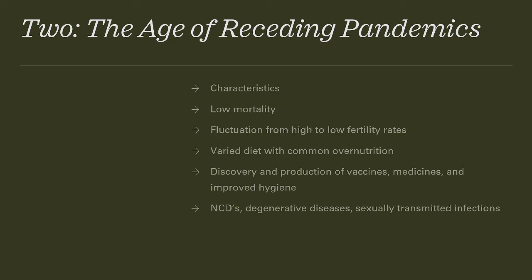The second transition, the age of receding pandemics, spans early modern to the 20th century. This is the period in which medicine and medicinal advancements were rushing forward. Characteristics include low mortality, fluctuation from high to low fertility rates, and a varied diet with common overnutrition — the standard American diet, or SAD diet, being an example. The discovery and production of vaccines, medicines, and improved hygiene changed the rates at which people get infected and treated.